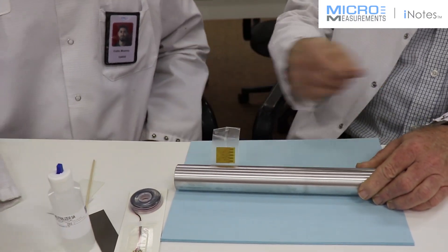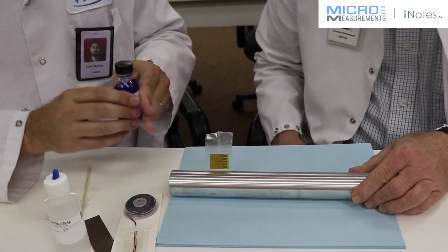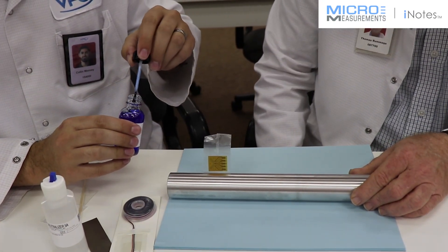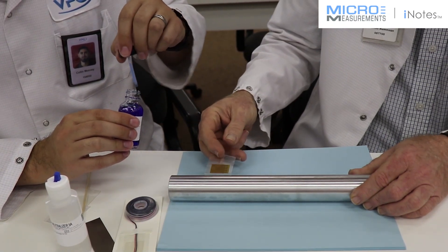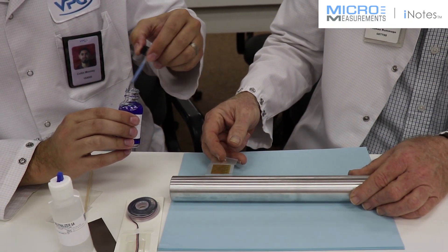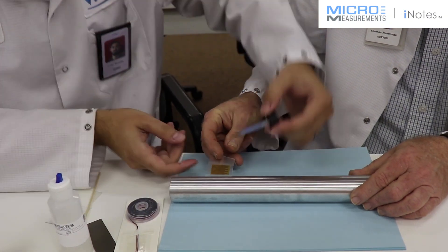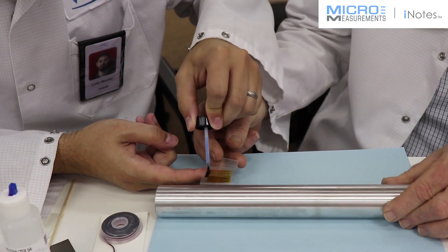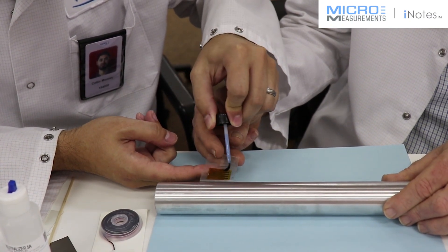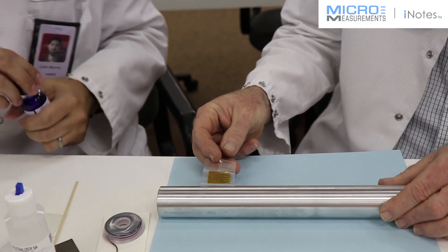What's the next step? Use our catalyst. Catalyst C, the blue top bottle. By the way, we're bonding with the M-Bond 200 because this shaft is not going to get hot or cold, and it's going to be what we would describe as a quick and dirty torque test.